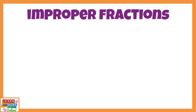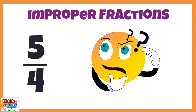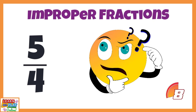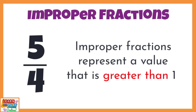Now that we understand proper fractions, let's move on to improper fractions. This fraction here, 5 quarters, or 5 fourths, is an example of an improper fraction. What do you notice? Improper fractions have a numerator that is either equal to or greater than the denominator. Improper fractions represent a value that is greater than 1.